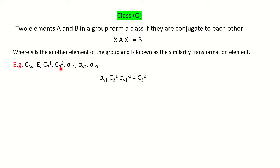We will see whether C3¹ and C3² form a class in the C3V point group. For that, we are taking σV1 as the similarity transformation element. σV1 will act as the similarity transformation. We take the inverse of it, and we want to see whether C3¹ acting as A and C3² as B — both elements belonging to the same group including σV1 — on performing this operation, if we get C3² then C3¹ and C3² form a class.